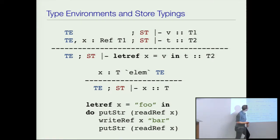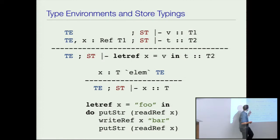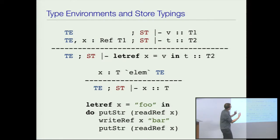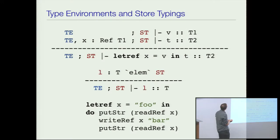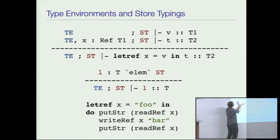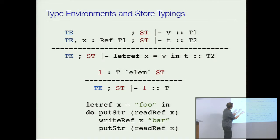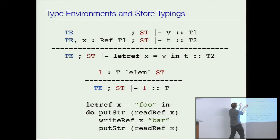The typing rule for variable says that if I have some variable and I want to find its type, I go looking in the type environment. But what happens if you have a location and you want to find its type? You don't get locations from the type environment, because the type environment only contains stuff which is static in the program. Variables are static — they're in the source program. But locations are created at runtime. So the types of locations go into the store typing. The type environment stores the types of variables; the store typing stores the types of locations.